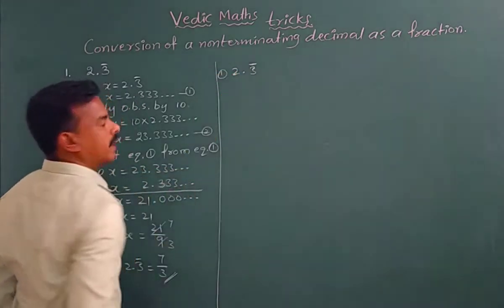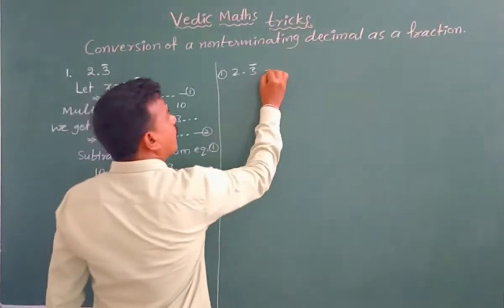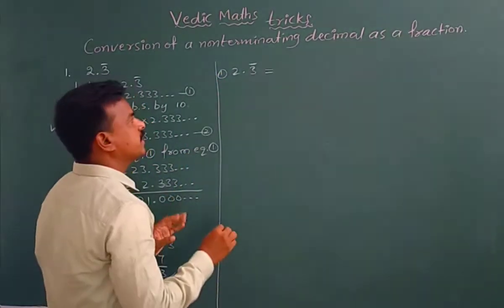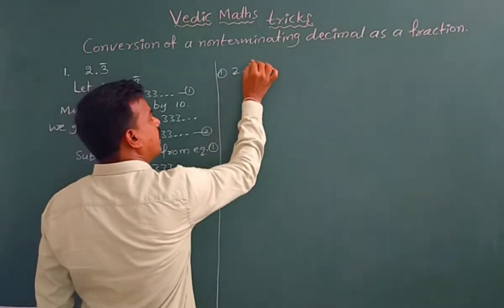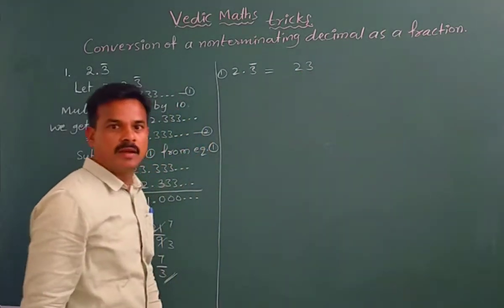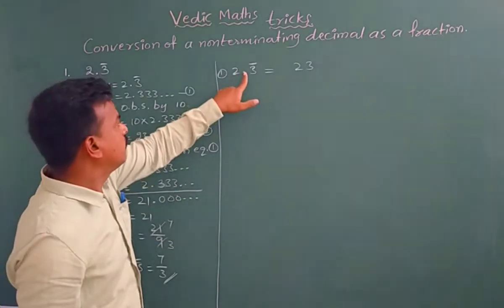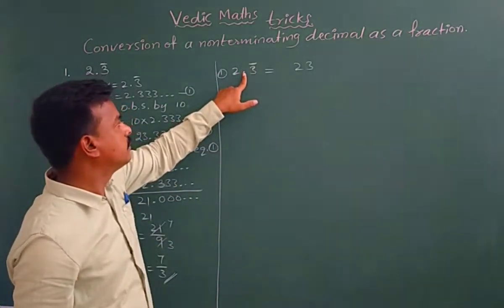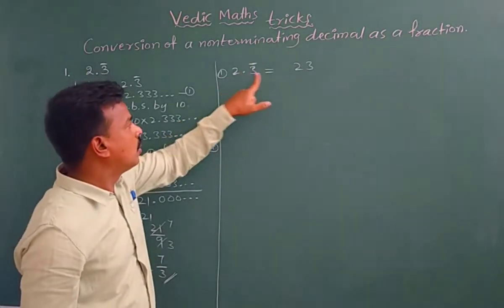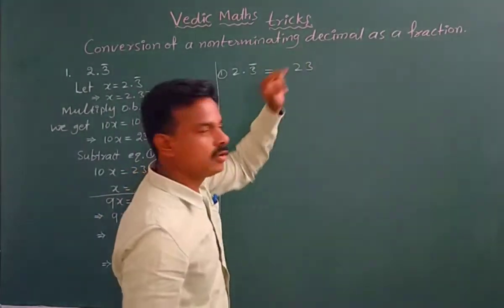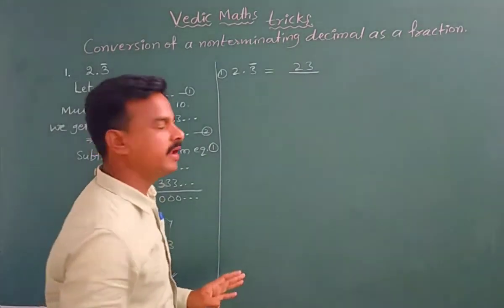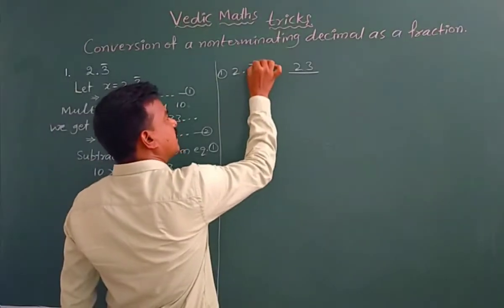Listen carefully without skipping. I will explain two three problems. Now we have to take the same problem 2.3 bar. The important step is, you see here 2.3 bar, just you remove point and bar and write the remaining numbers 2 3. So we eliminated, we removed the decimal point and the bar, so we get the number 23.